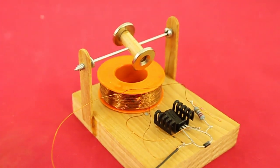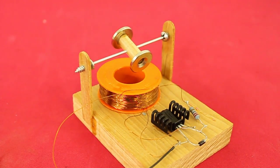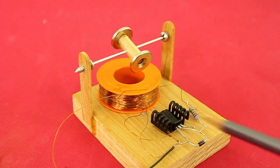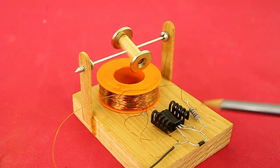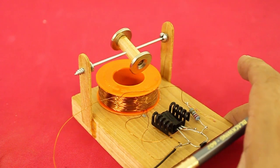They are connected as in the diagram. Here we have the transistor, diode and the resistor and the rotor.